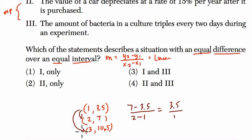But if I compare these two points, I'll get the same thing. 10.5 minus 3.5 over 3 minus 1. That equals 7 over 2. And that's still 3.5 for every 1. Or just 3.5.